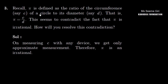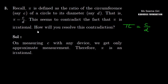Q3. Pi is defined as the ratio of the circumference, say C, of a circle to its diameter, say D. That is, pi is equal to circumference upon diameter — pi equals C upon D. This seems to contradict the fact that pi is irrational. How will you resolve the contradiction?